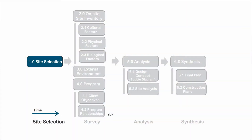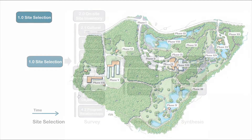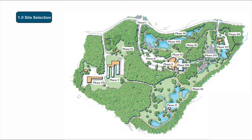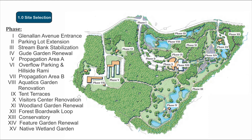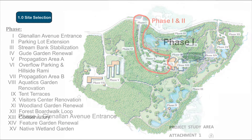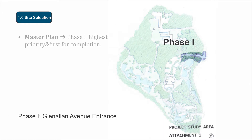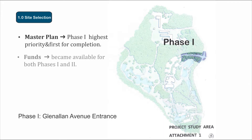The first step is the identification of the site and its boundaries. Based on projected sources of costs and revenues, the master plan for Brookside Gardens identified 15 phases for development. The phases were prioritized and the main entrance received the highest priority.